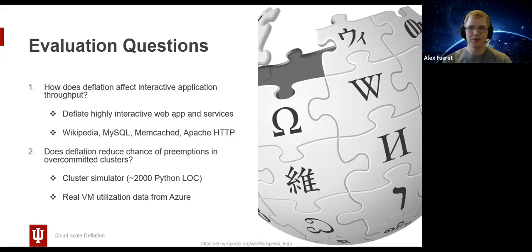Our second question asks how well deflation reduces the chance of preemption in over-committed clusters. To answer this, we created a cluster simulator with one of our server-level deflation policies and the cluster-level deflation-aware VM placement. The VM utilization trace data from Azure is run through the simulator, with VMs being started and stopped corresponding to the trace data. Deflation of each VM is tracked over their lifetimes, and we examine cluster-wide under-allocation along with the number of preemptions that occur.